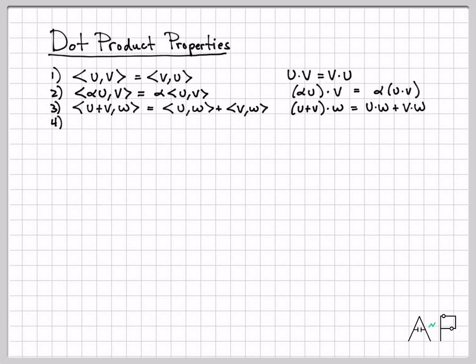And then finally, the fourth property: the inner product of u and u is always greater than or equal to zero. So that means my dot product is always greater than or equal to zero, and it's going to equal zero if and only if u is zero. So this is just me recasting these four inner product properties for the specific instance of our inner product being a dot product.